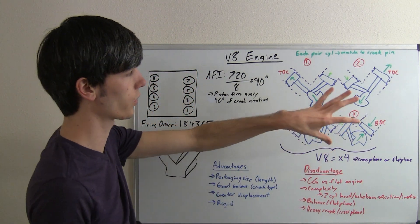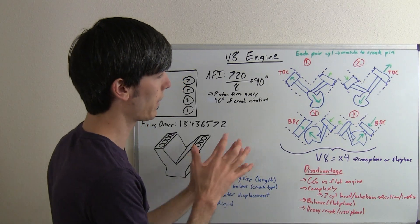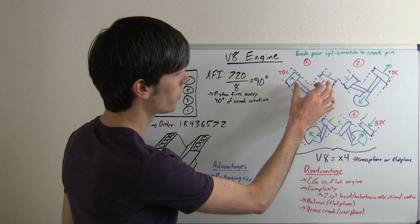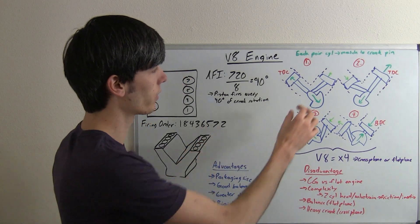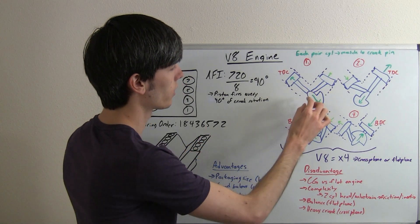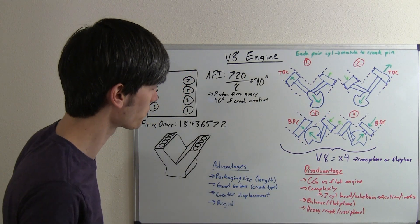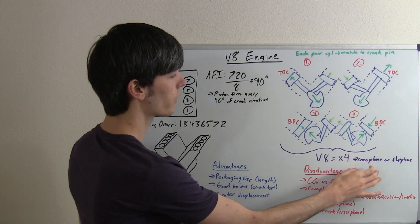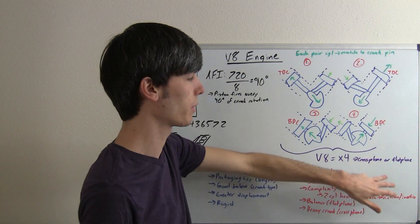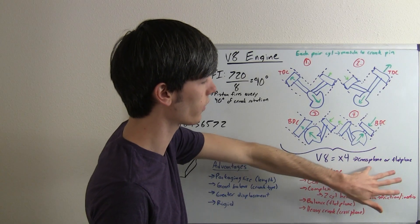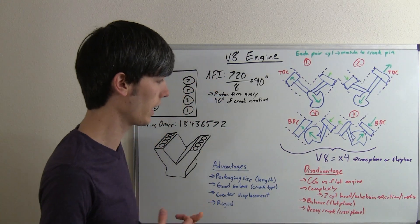Now, a V8 is essentially four of these little two cylinder devices here matched together. So, these two pistons are on a common crank pin. So, that means both of these connecting rods are connecting to basically the same area. It's just offset a little bit of where that crankshaft is. Now, this differs depending on the crankshaft if it's a cross plane or flat plane. And I'm going to make a separate video because there's very distinct differences between these two types of crankshafts and V8 engines.